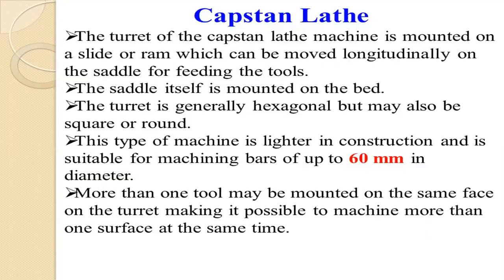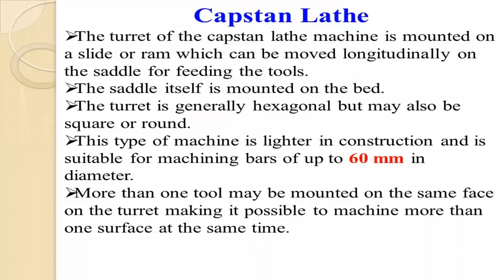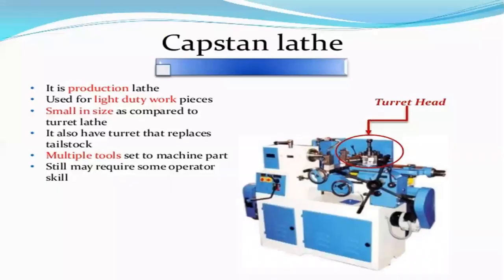The turret of the capstan lathe machine is mounted on a slide or ram which can move longitudinally on the saddle for feeding the tools. The saddle itself is mounted on the bed and is fixed there. The turret is generally hexagonal in shape but may also be square or round.